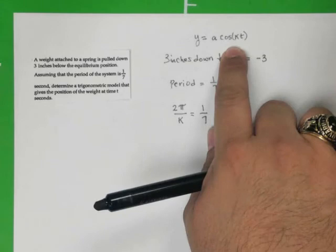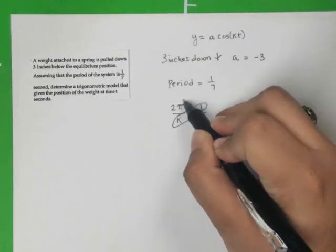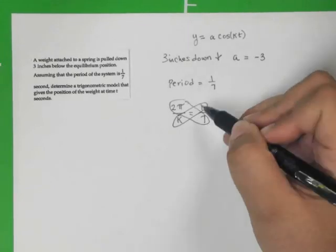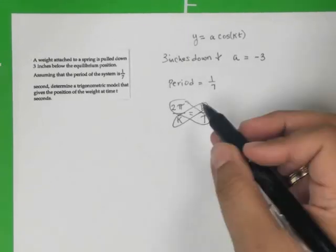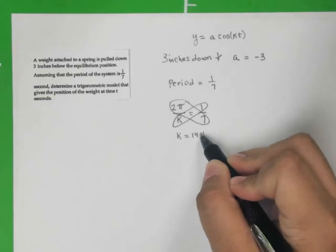We simply solve for this k value. This is quite simple. You just cross-multiply here, and you easily and quickly solve for k. This tells you that k equals 14π.